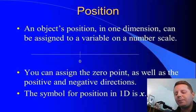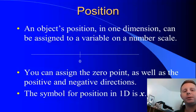So position. An object's position in one dimension can be assigned to a variable on a number scale. We can set the zero wherever we want, we can set whichever direction we want to be positive, as long as we're consistent within that problem.